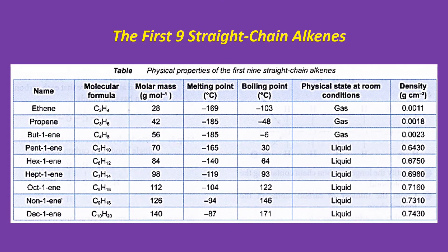This table shows the specific values of physical properties of the first nine straight chain alkenes.